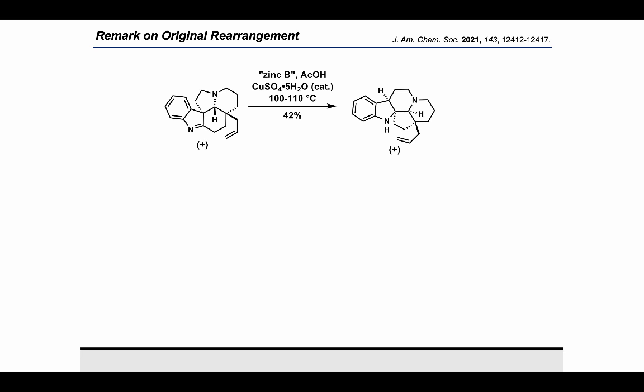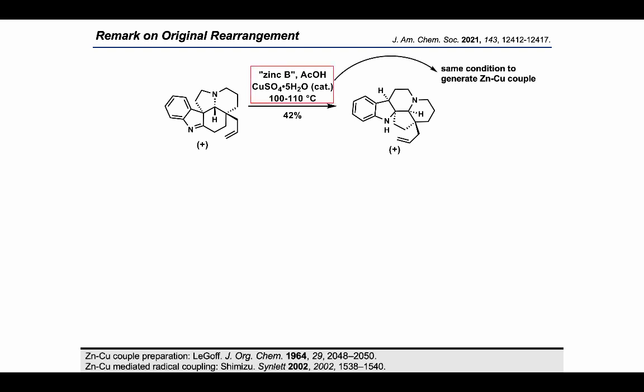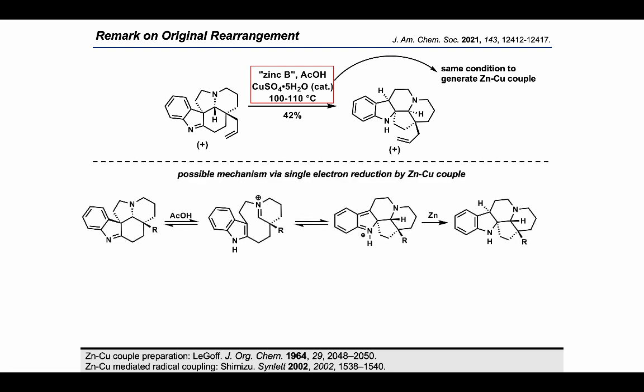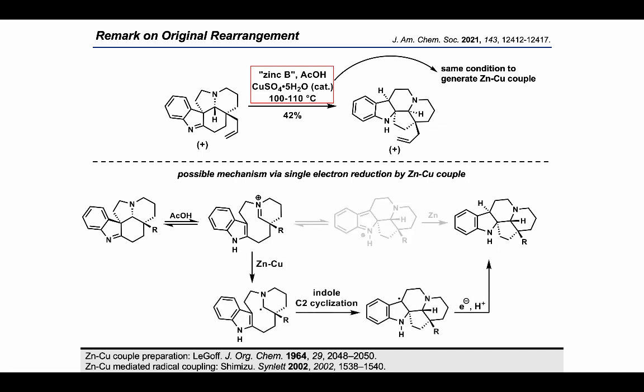With our results in hand, it can be speculated that in the original conditions, the active reductant could be an in-situ generated zinc-copper couple, which is known to induce radical formation from reduction of imines. A possible alternative mechanism could involve single electron reduction by the zinc-copper couple of the iminium to generate an alpha-amino radical, followed by cyclization onto C2 of the indole to give the same product.